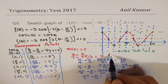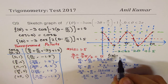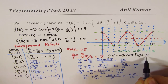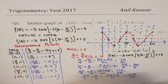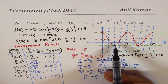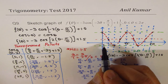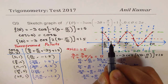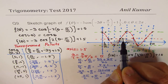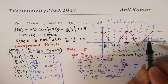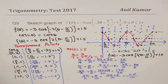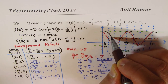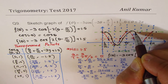In step two, we sketch f(θ) = -3cos(2(θ - π/10)) + 1.5 with the phase shift. Since π/4 of the scale represents about π/10 units, I shift every point π/10 units to the right, giving the final graph of f(θ).